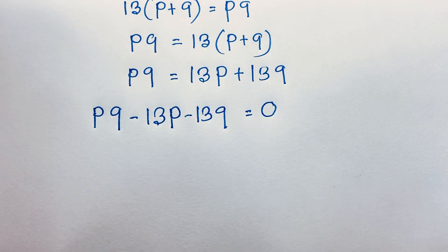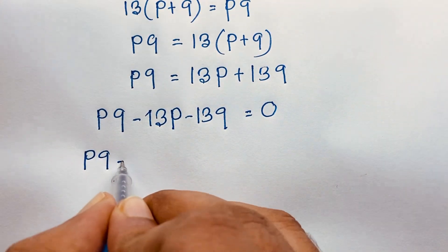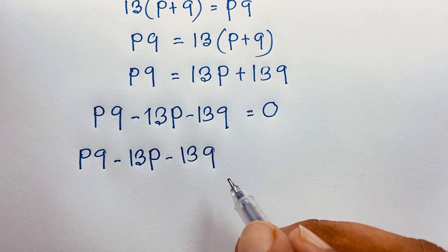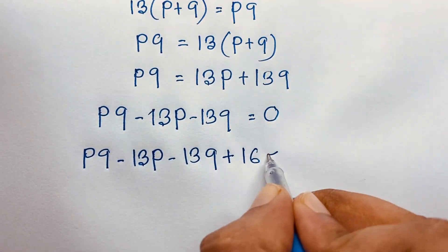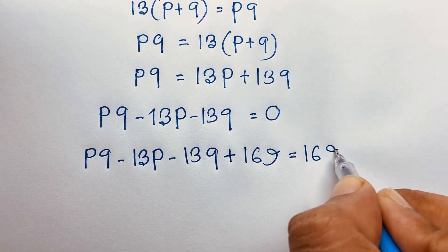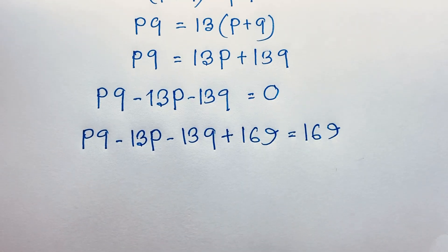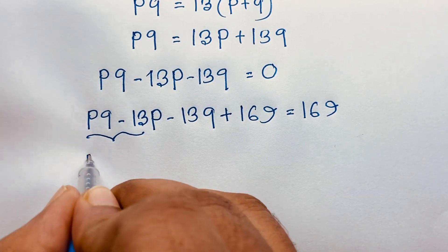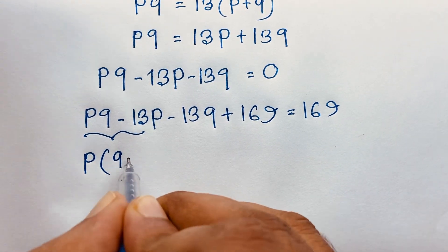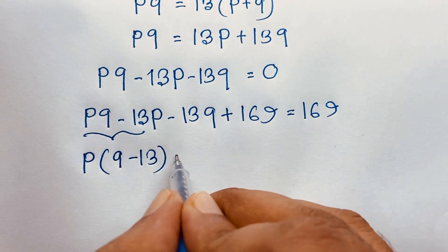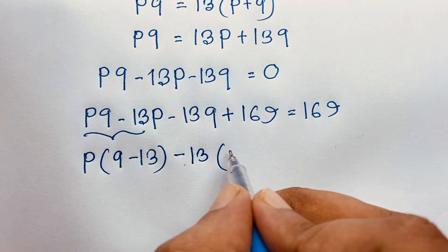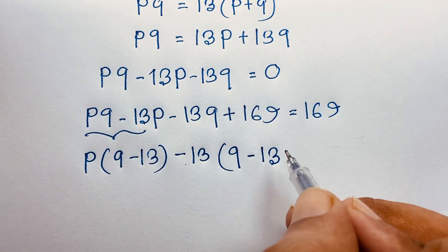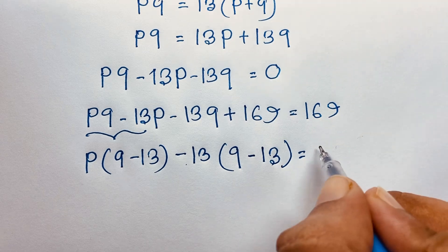Now you can see here: PQ minus 13P minus 13Q. I add 169 to both sides, so we get PQ minus 13P minus 13Q plus 169 is equal to 169. P is common, so P times (Q minus 13), and then taking 13 as common gives minus 13 times (Q minus 13), equal to 169.